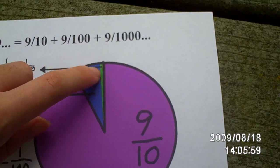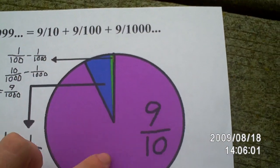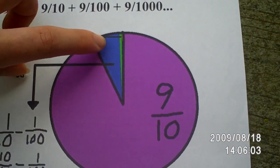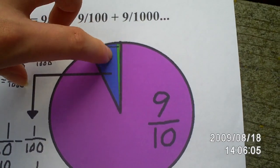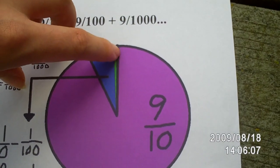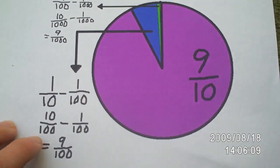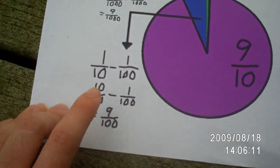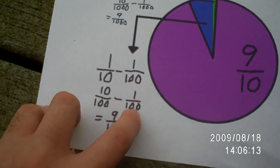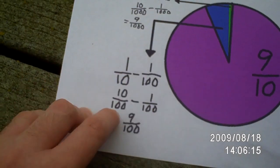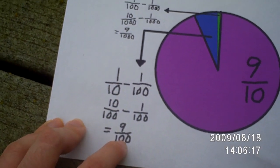This is one-tenth right here. And this is nine-tenths. Now, here, this whole bit is one-tenth minus that bit, which is a hundredth. One-tenth minus one-hundredth. And that's ten-hundredths minus one-hundredth, since one-tenth is ten-hundredths. And that's nine-hundredths right there.